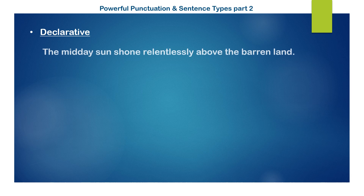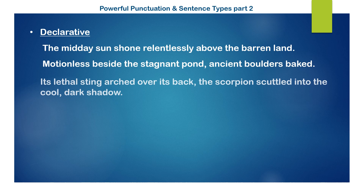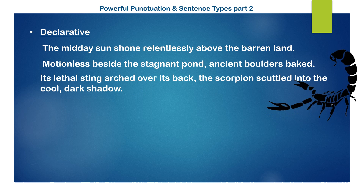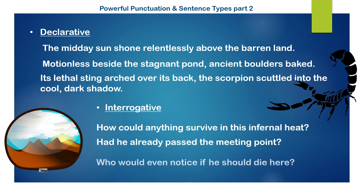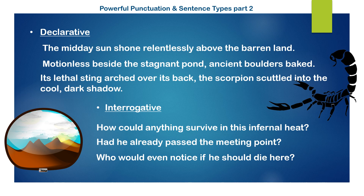In narrative, we frequently use declarative sentences to relate action or to provide description and create atmosphere. Notice how these three statements imply a sense of danger or hostility. A narrative comprising only declarative sentences can feel a little repetitive or dull, so consider how you might incorporate the occasional question. In this example, the use of interrogative intensifies the sense that the environment is hostile and the threat of death seems real. Questions relate to survival, a possible mistake, isolation and even death.